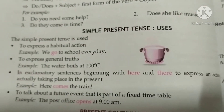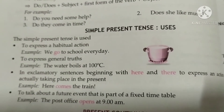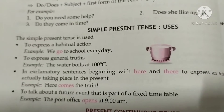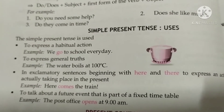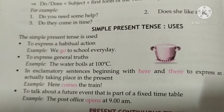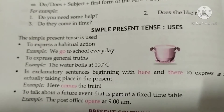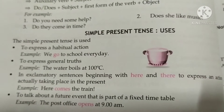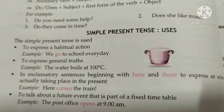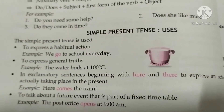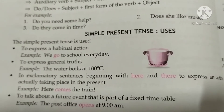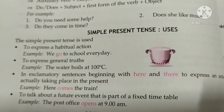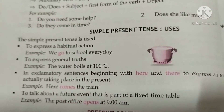Simple present tense is used to express a habitual action — for example, 'We go to school every day.' This is your habitual work, something you do daily. It is also used to express a general truth — for example, 'Water boils at 100 degrees Celsius.'